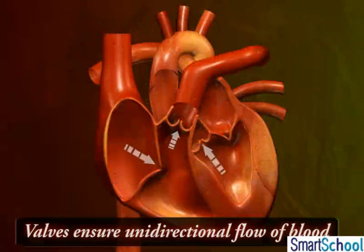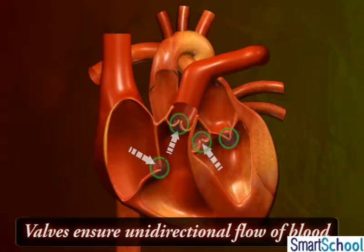The walls ensure unidirectional flow of blood, even on the contraction of the auricles and the ventricles.